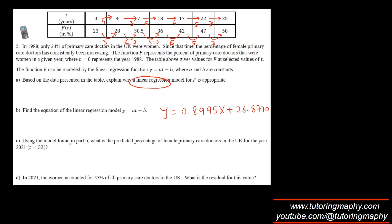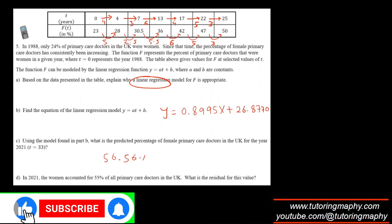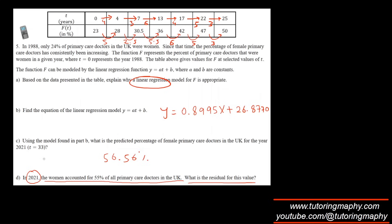Using the model, what is the predicted percentage at t equals 33? So let's replace x with 33 here and find that. That is coming as 56.56 percent. In 2021, women accounted for 55 percent. What is the residual value? First, let's find the t value at 2021, which is of course 33, and we already have the predicted value which is 56.56.